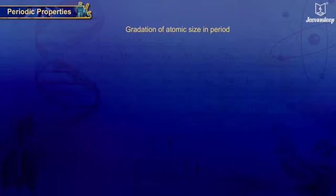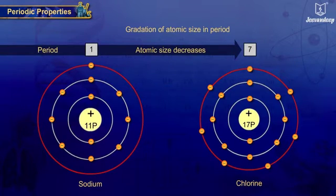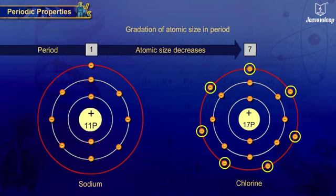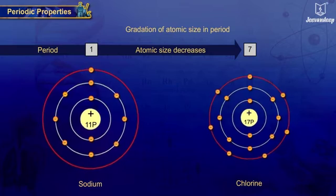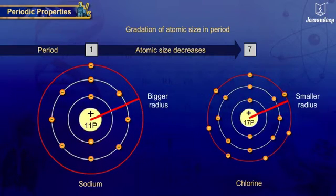Gradation of atomic size in a period: Atomic size decreases from left to right as electrons are added to the same shell and concentration of positive charge in the nucleus increases, hence greater pull from the nucleus leading to decreased size.